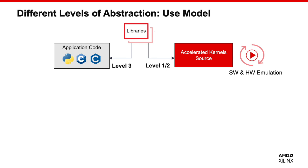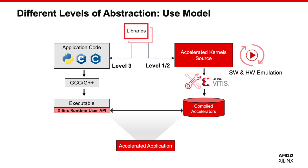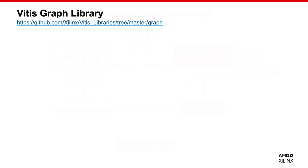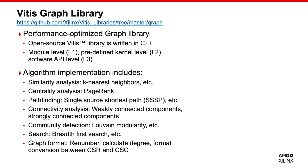To do the SSP part, we can use different levels of abstraction as mentioned before. I will use L2 pre-optimized kernels to realize my core development. Before we use the functions provided by SSP kernels, let's take a look at the VITES Graph Library. VITES Graph Library is an open-source VITES library written in C++ for accelerating graph applications in a variety of use cases. It now covers three levels of acceleration: the module level L1, the pre-defined kernel level L2, and the software API level L3.